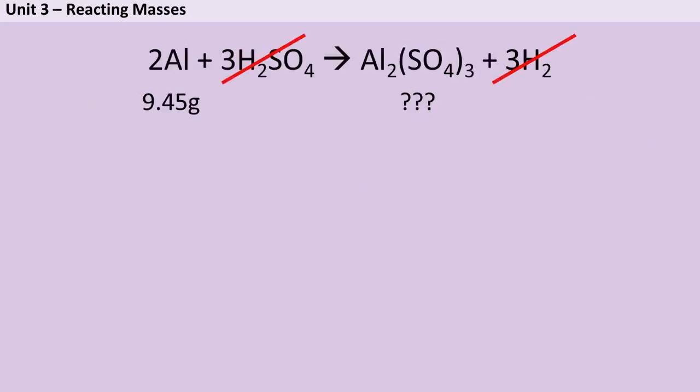Just like before, my first step is going to be adding the numbers from the question underneath my equation and crossing out anything I don't need to use. I could spend ages working out what the relative formula mass of sulfuric acid is, only to realise that I didn't even need it to answer this question. So make sure whatever mass they've given you, that goes under that chemical, and whatever chemical they've asked you to calculate the mass for, then you put your question marks. Everything else you cross out.